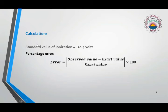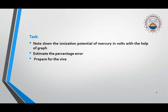Now the task. Calculation: First of all the standard value of ionization potential of mercury is given, that is 10.4 volts. With the help of this value you have to find out the percentage error. The exact value is 10.4 volts and the observed value is what you have noted down from the graph.